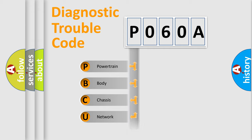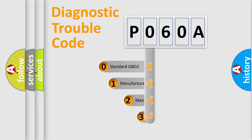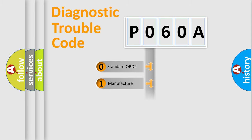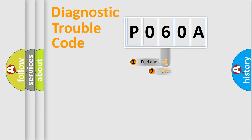We divide the electric system of an automobile into four basic units: powertrain, body, chassis, and network. This distribution is defined in the first character of the code. If the second character is expressed as zero, it is a standardized error. In the case of numbers 1, 2, or 3, it is a manufacturer-specific error.